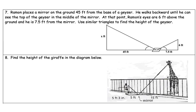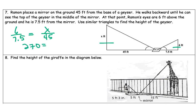Welcome back. Raymond places a mirror on the ground 45 feet from the base of a geyser. He walks backwards until he can see the top of the geyser in the middle of the mirror. At this point, Raymond's eyes are 6 feet above the ground and he is 7.5 feet from the mirror. Using similar triangles: 6 over 7.5 equals x over 45. Cross product: 6 times 45 is 270 equals 7.5x. Divide by 7.5, and x will equal 36.